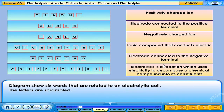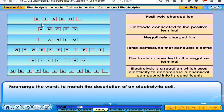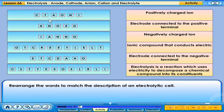The diagram shows six words that are related to an electrolytic cell and the letters are scrambled. Rearrange the words to match the description of an electrolytic cell.